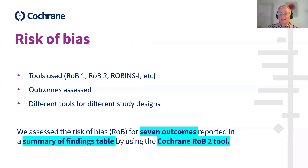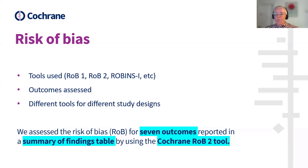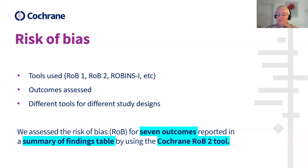Under the risk of bias heading, you want to state the tools used to assess risk of bias — that could be the original Risk of Bias 1 tool, Risk of Bias 2, ROBINS-I, or any other appropriate tools. You also want to report the specific outcomes for which you assessed risk of bias. If your review included different study designs, different risk of bias tools would be applied — for example, Rob 1 or Rob 2 for RCTs, and ROBINS-I for non-randomised studies of interventions. The authors of the AMD review reported that they assessed risk of bias for seven outcomes in the summary of findings table using the Risk of Bias 2 tool. Since this was an intervention review on RCTs only, they didn't include any non-randomised studies.